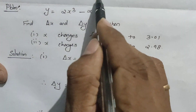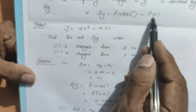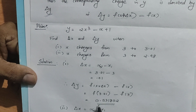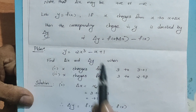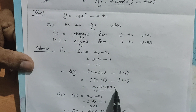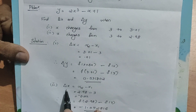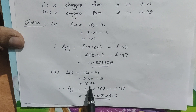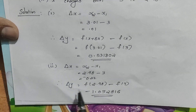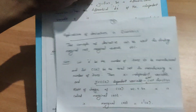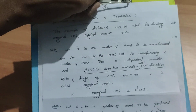The corresponding delta Y equals F of X plus delta X minus F of X, that is F of 3.01 minus F of 3. Substituting into the equation, we get delta Y equal to 0.531802. For the second question, X changes from 3 to 2.08, giving a negative delta Y increment.